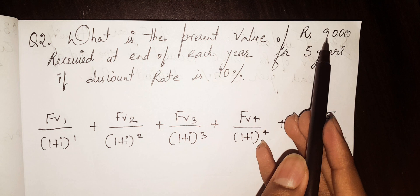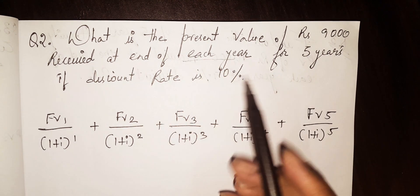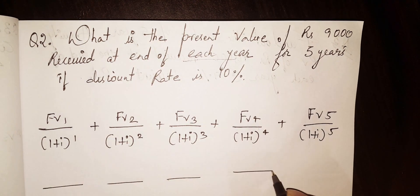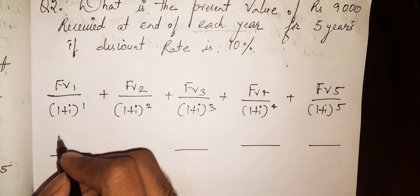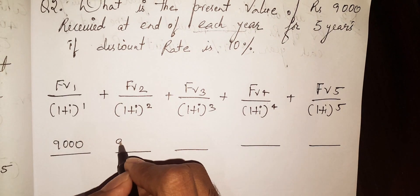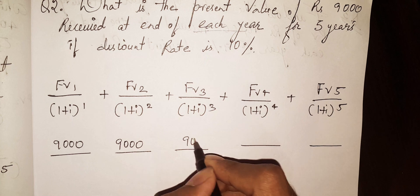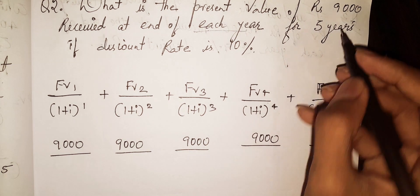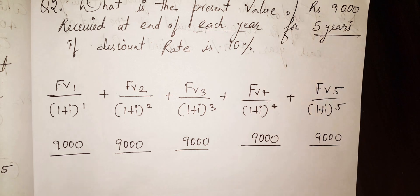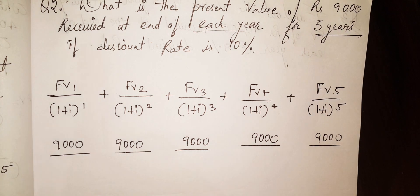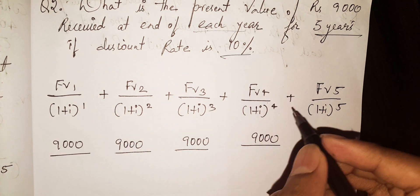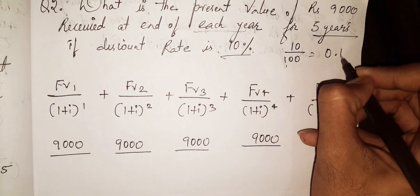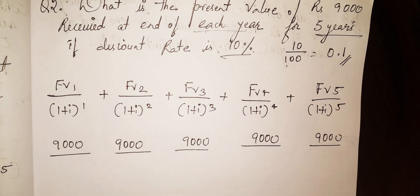What is the present value of 9000 received at the end of each year? Every year you receive 9000 rupees for 5 years — years 1, 2, 3, 4, 5. The discount rate is 10%, which is 10 divided by 100, equal to 0.1.